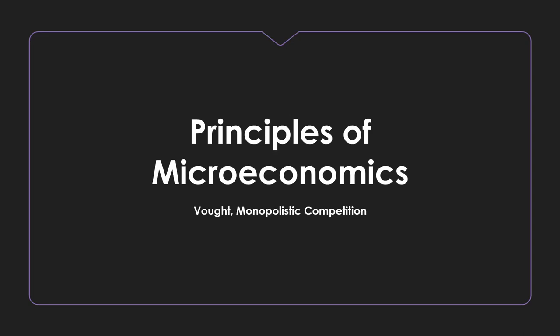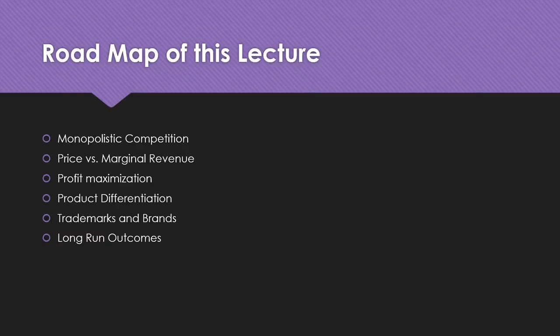Hello class, and welcome to this lecture on monopolistic competition in our course on microeconomics. To give you a roadmap of what we're going to discuss: we'll talk about what makes a market structure monopolistically competitive, the relationship and differences between price and marginal revenue in any non-perfectly competitive market, how profit maximization occurs and how to analyze it using graphs, product differentiation, trademarks and brands, and the long-run outcomes of a monopolistically competitive firm.